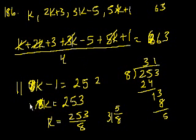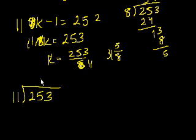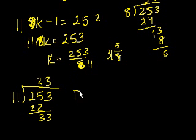So 11k minus 1, and k equals 253 divided by 11, which is 11 goes into 253. 2 times 22, 33. That's nicer. Goes in exactly 23 times, and that's choice D. Sorry for the error.